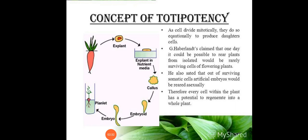In totipotency, first a callus is formed, and it grows into a complete plant when suitable conditions are provided by the explant. Somatic cells can form artificial embryos and be reared asexually. Through somatic cell division, a whole plant is produced. Therefore, every cell within the plant has the potential to regenerate into a whole plant.